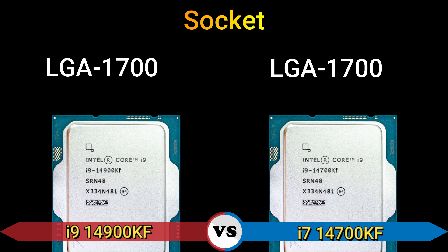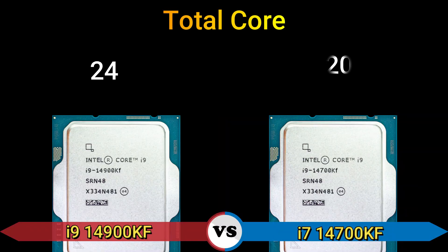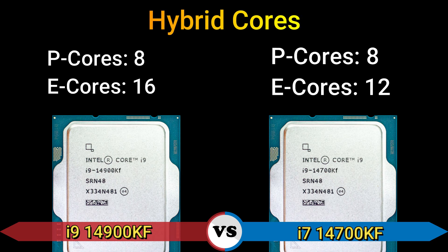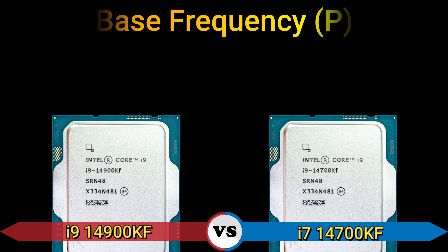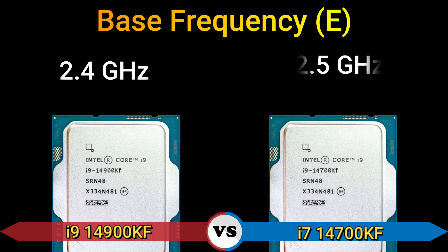Total cores: 24 and 20. Total threads: 32 and 28. Hybrid cores — performance cores: 8, efficient cores: 16 and 12. Base frequency — performance cores: 3.2 GHz and 3.4 GHz.